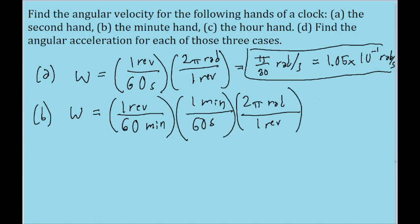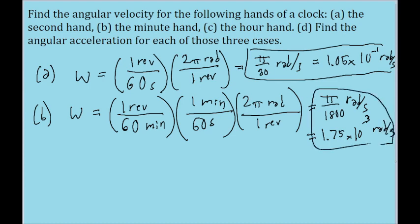And if you put them into our calculator, we find an angular velocity of pi over 1800 radians per second. Or alternatively, 1.75 times 10 to the power of negative 3 radians per second. And that's for the minute hand.